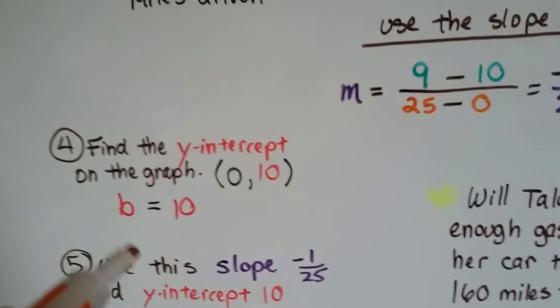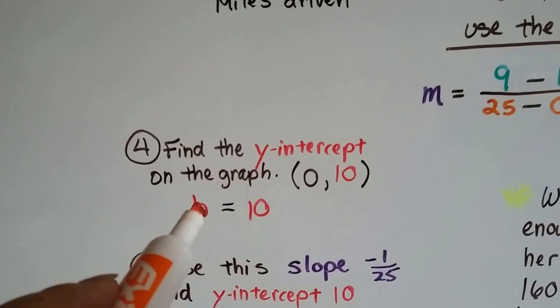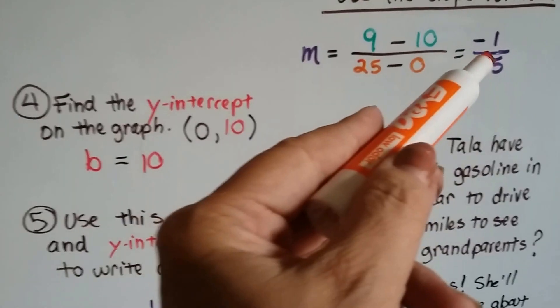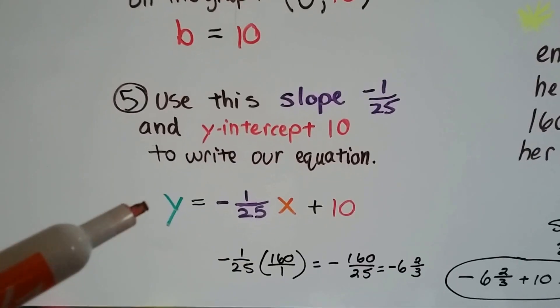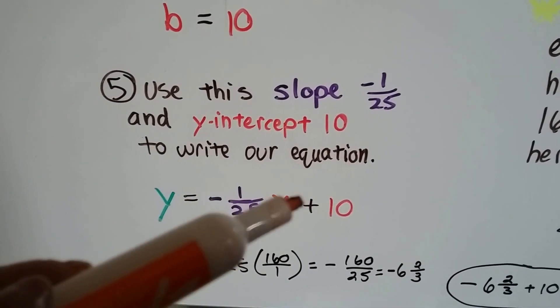So now we know in our slope-intercept form of an equation, the b is going to be 10. We use this slope, negative 1/25 that we found, and the y-intercept 10 to write our equation. So we've got y equals negative 1/25x plus 10.